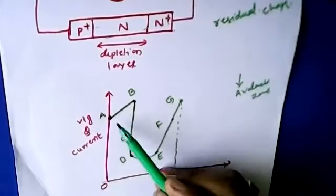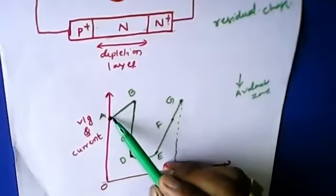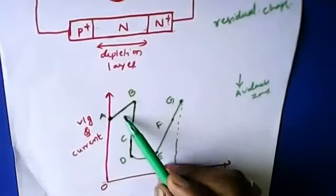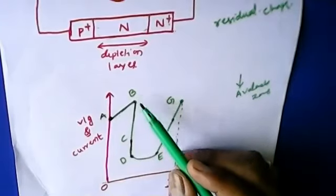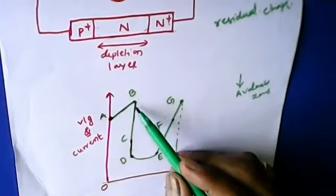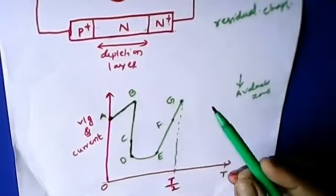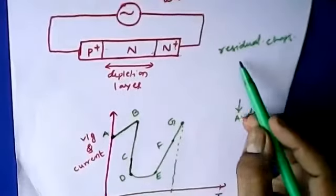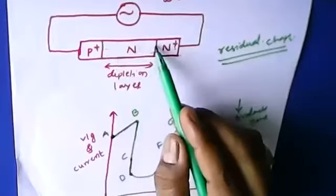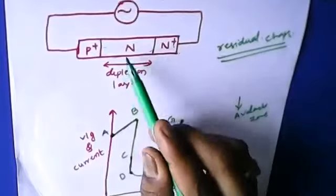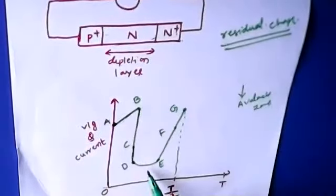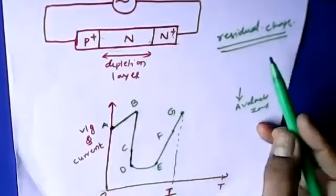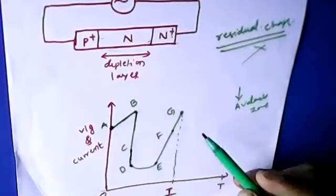This all takes place during the first half cycle. In the first half cycle, the field normally increases until it is less than the avalanche zone, at which point the diode charges like a normal capacitor. Once fully charged, the voltage drops because the field exceeds the avalanche zone, continuing down to point D, where residual charges are again stagnated and must be removed.